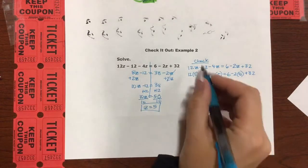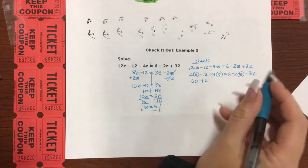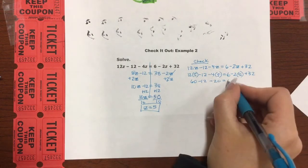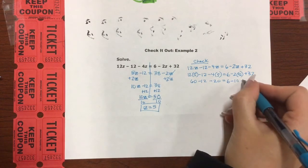So we have 12 times 5 minus 12 minus 4 times 5 equals 6 minus 2 times 5 plus 32. Okay, 12 times 5. I really think that's 60. 60 minus 12 minus 4 times 5 would be a negative 20. Equal 6. Negative 2 times 5 is negative 10 plus 32.